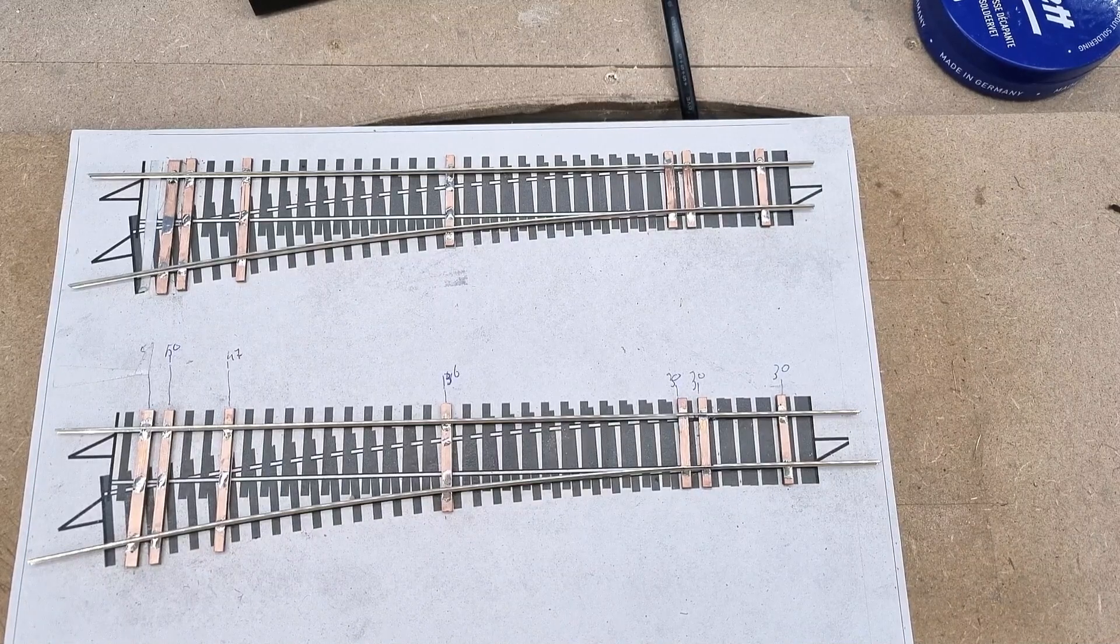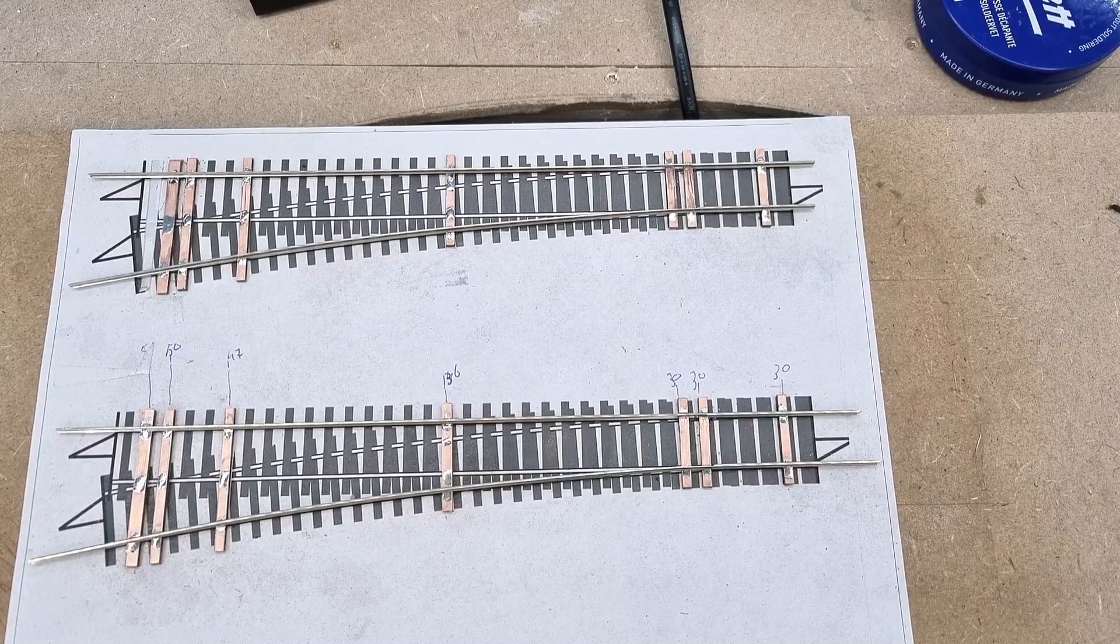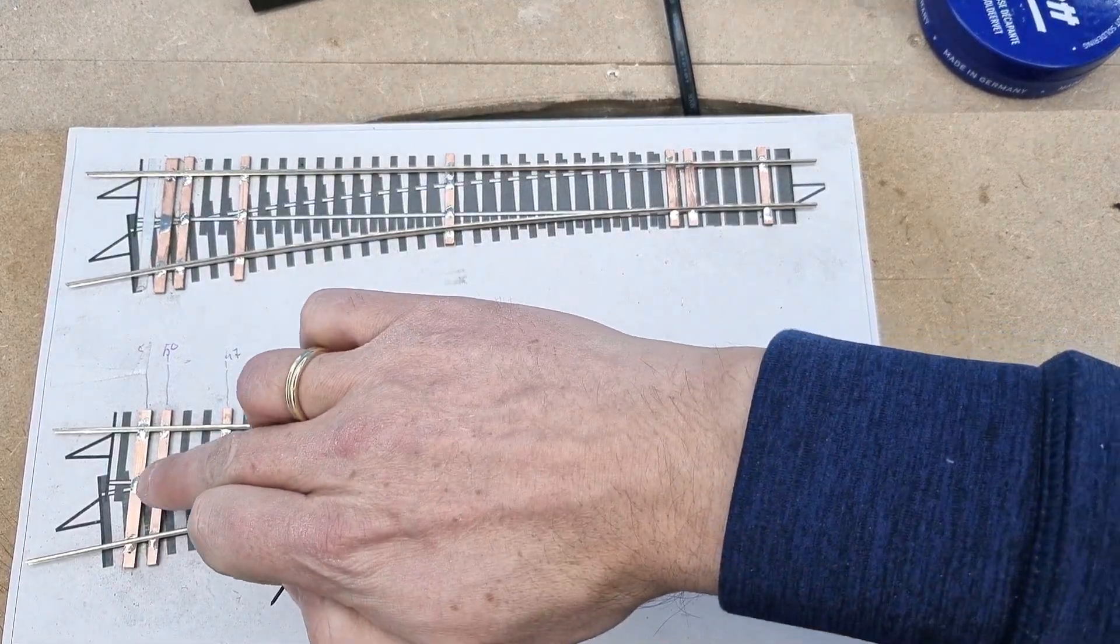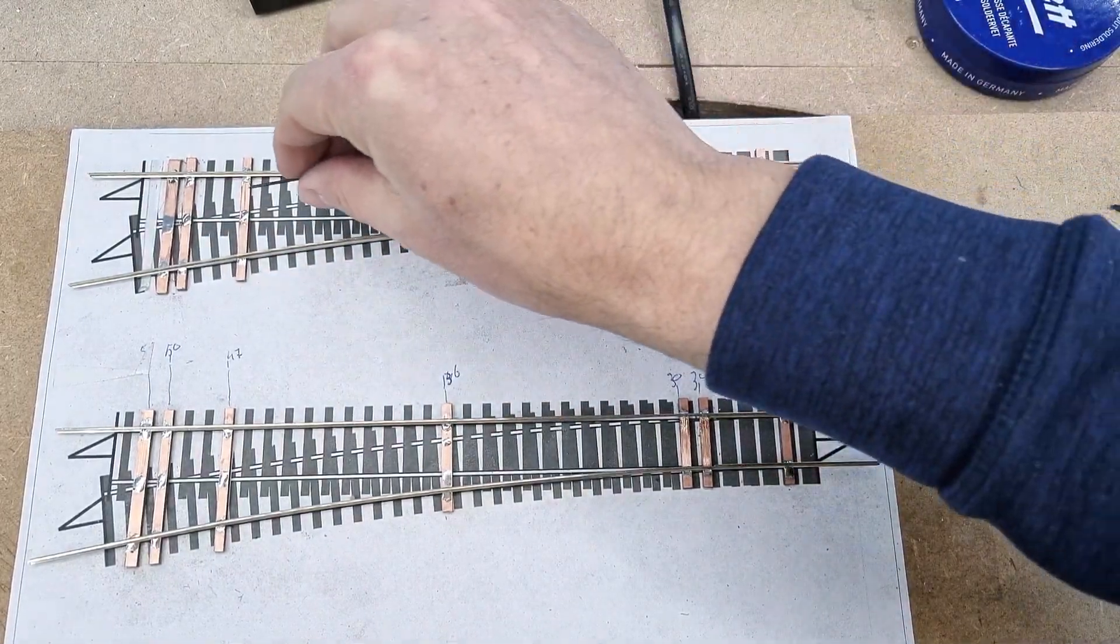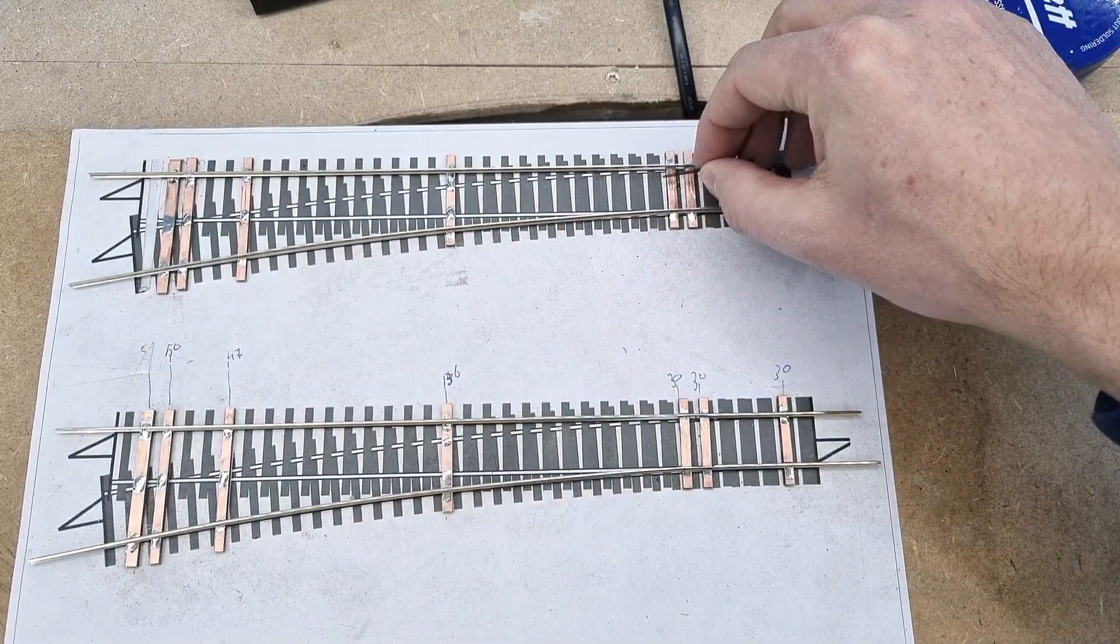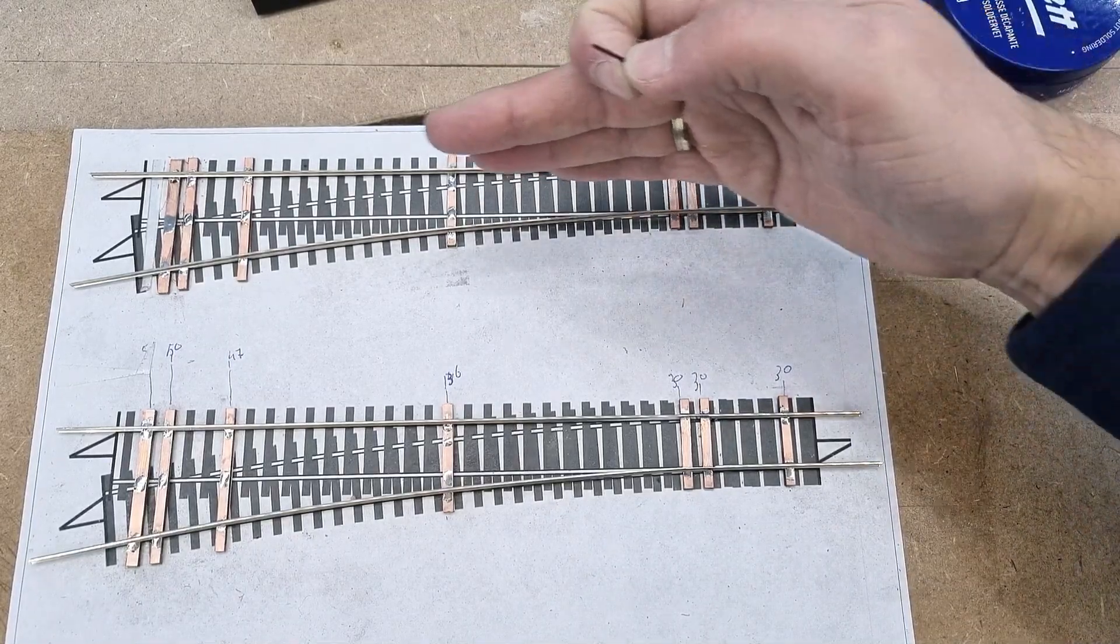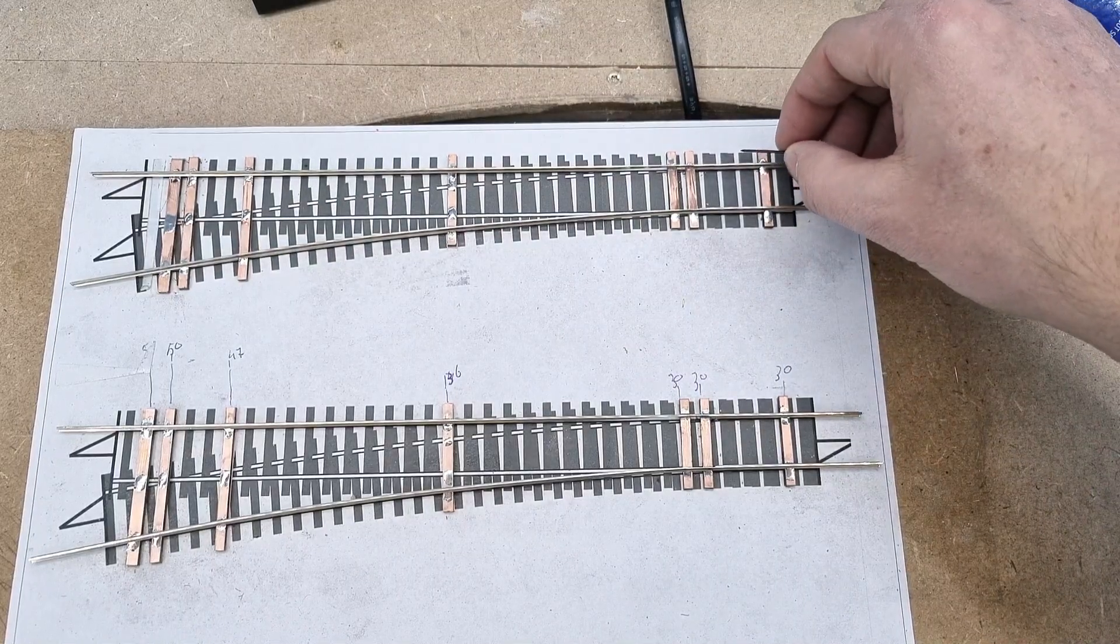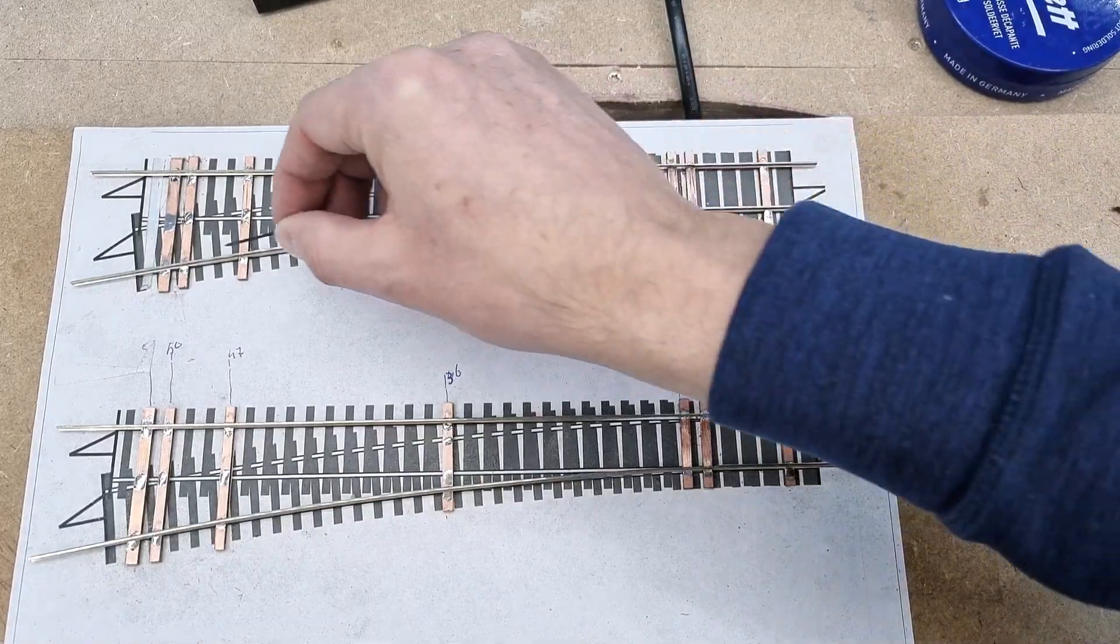Hi, welcome back everybody. This is part two in the series about how I make my own turnouts. Today I want to concentrate on making the points here and also on making the switching rails that determine whether the train goes straight ahead or branches off. We'll also be making ties and guard rails.